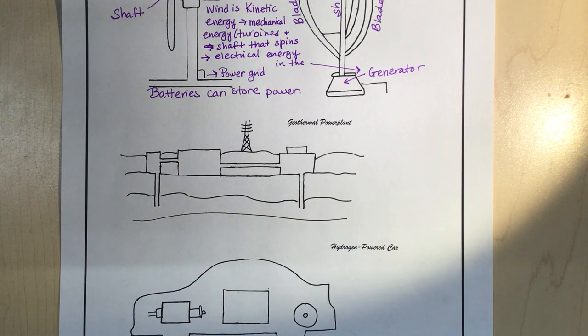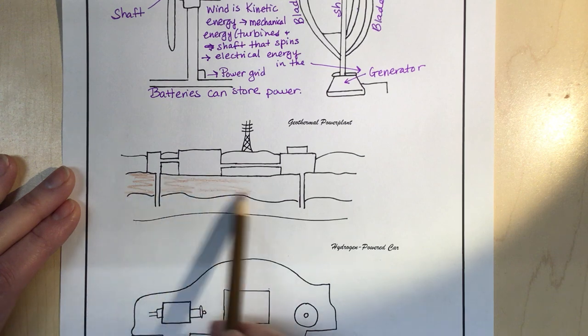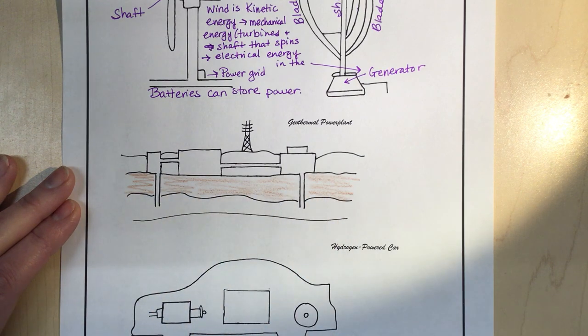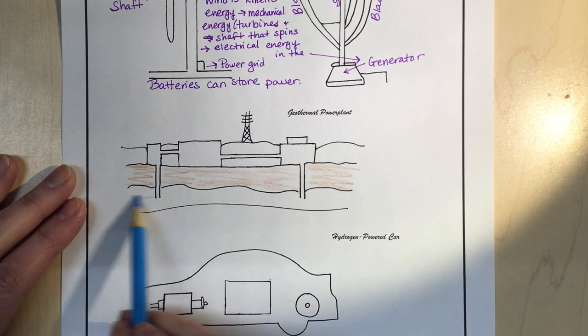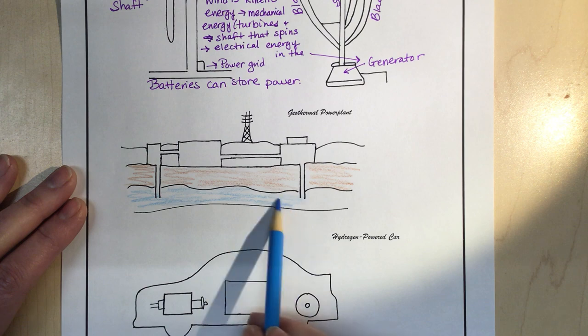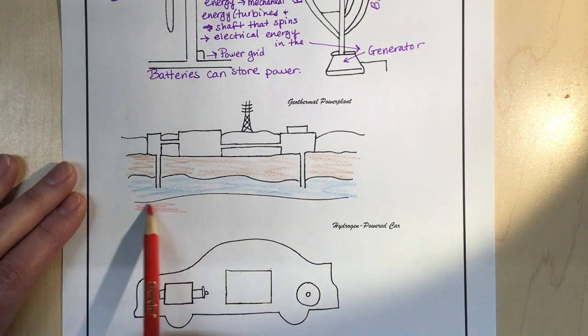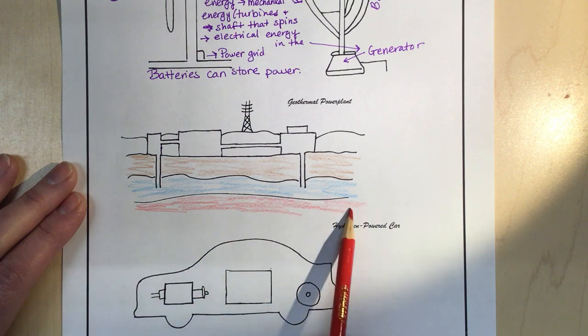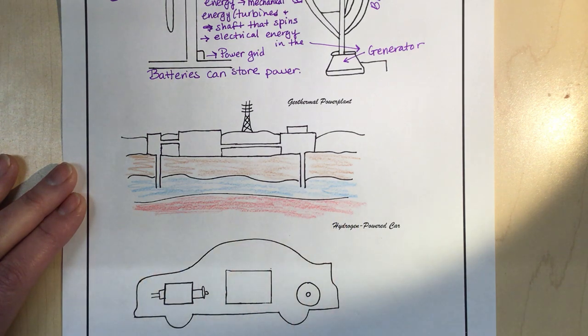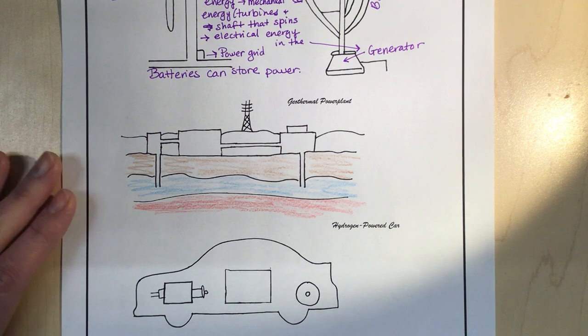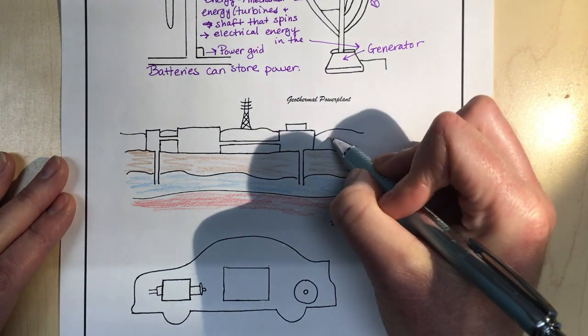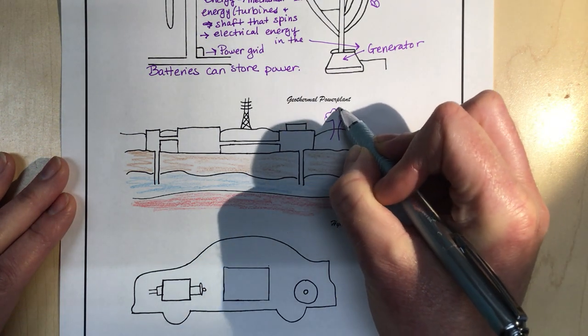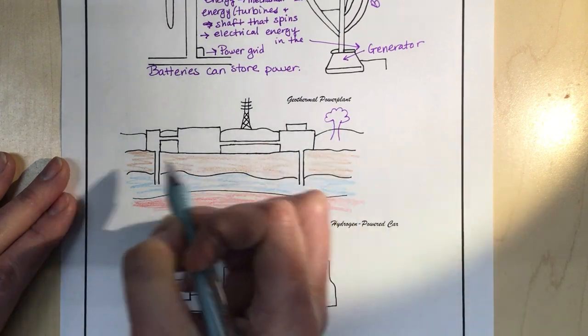The next one is a geothermal power plant. Let's use some colors to help us figure out what this picture is. It's a side view of land. We have a rock layer here. Then here we have an aquifer, so our groundwater. And down here we have magma. There are some places in the world where magma comes close to the aquifers. I'm just going to draw some trees here to show you that this is above ground.